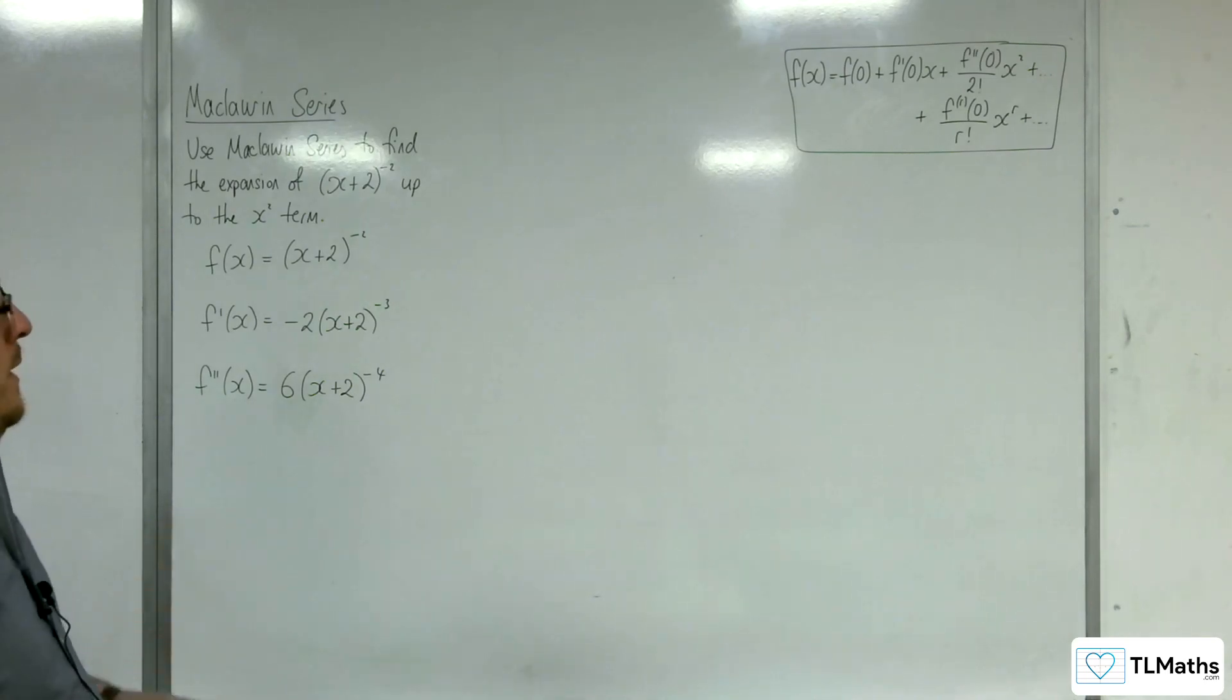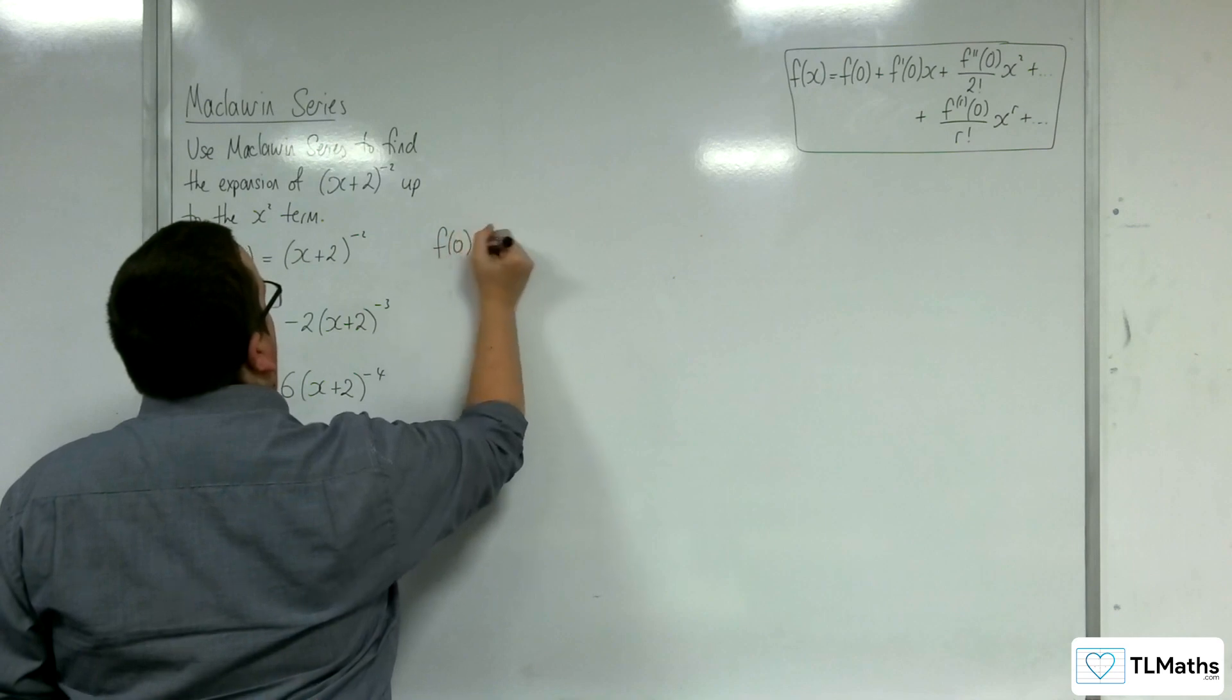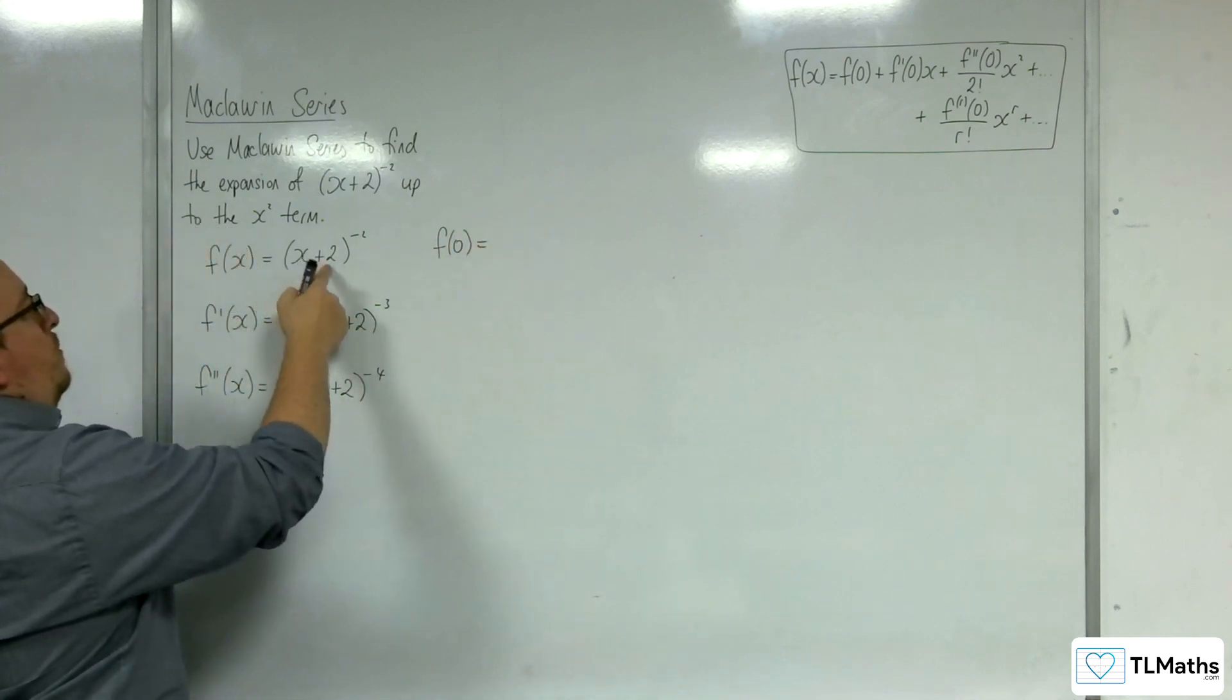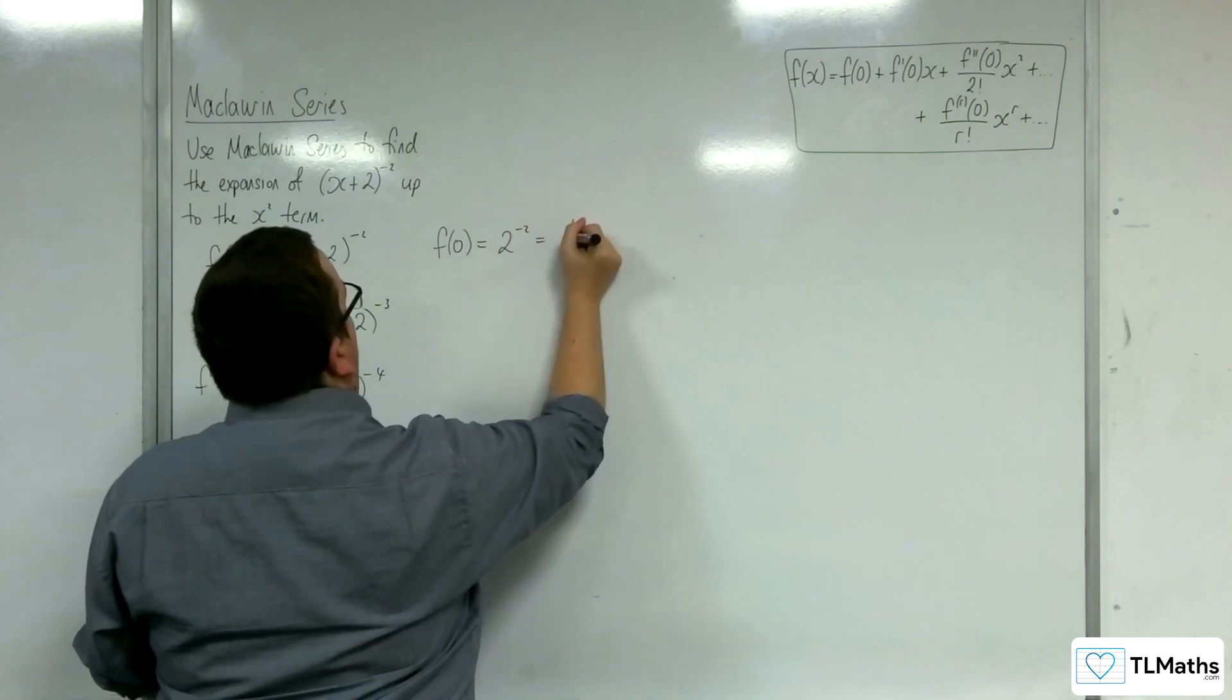So then I would evaluate these at 0. So f(0) is (0+2)^(-2), so 2^(-2), which is 1/4.